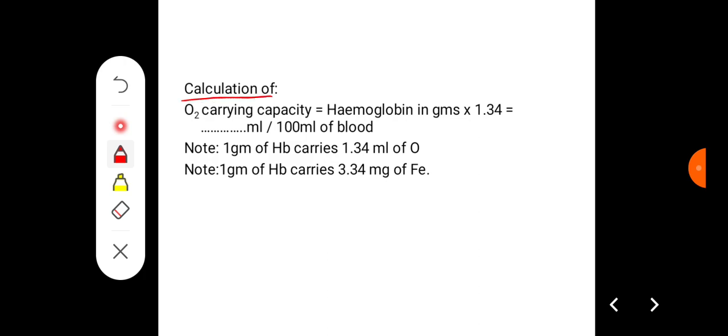Calculation: oxygen carrying capacity has to be calculated. That will be hemoglobin in grams times 1.3, which will give so many ml per 100 ml of blood. That is oxygen carrying capacity. Note that one gram of hemoglobin carries 1.34 ml of oxygen, and one gram of hemoglobin carries 3.34 milligrams of iron.